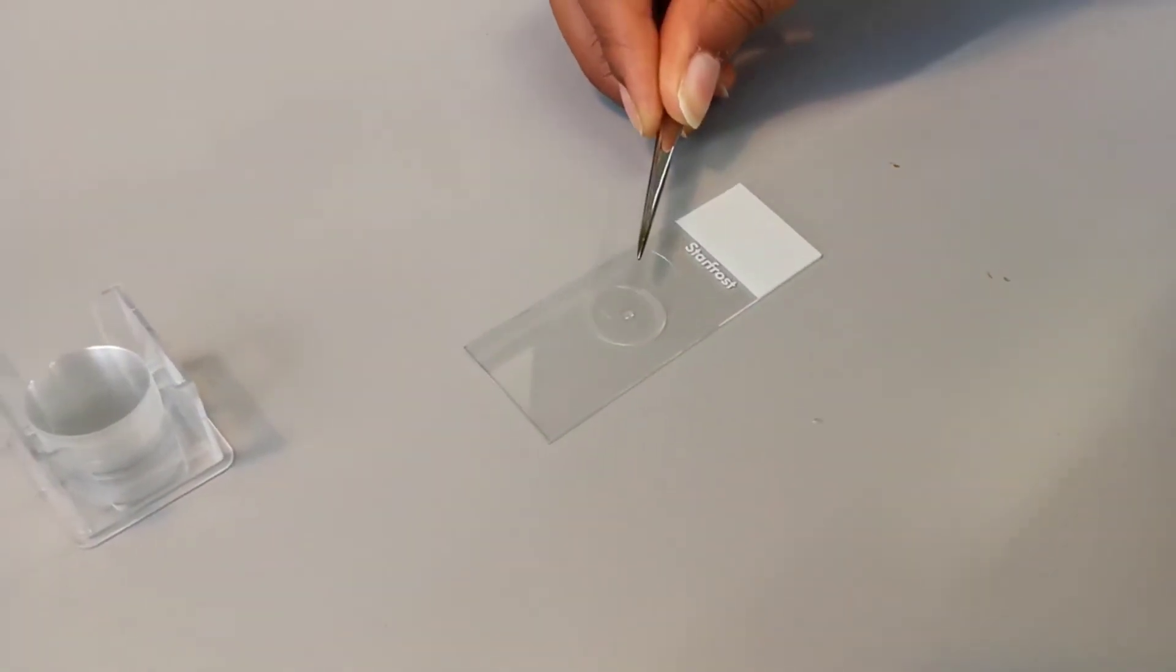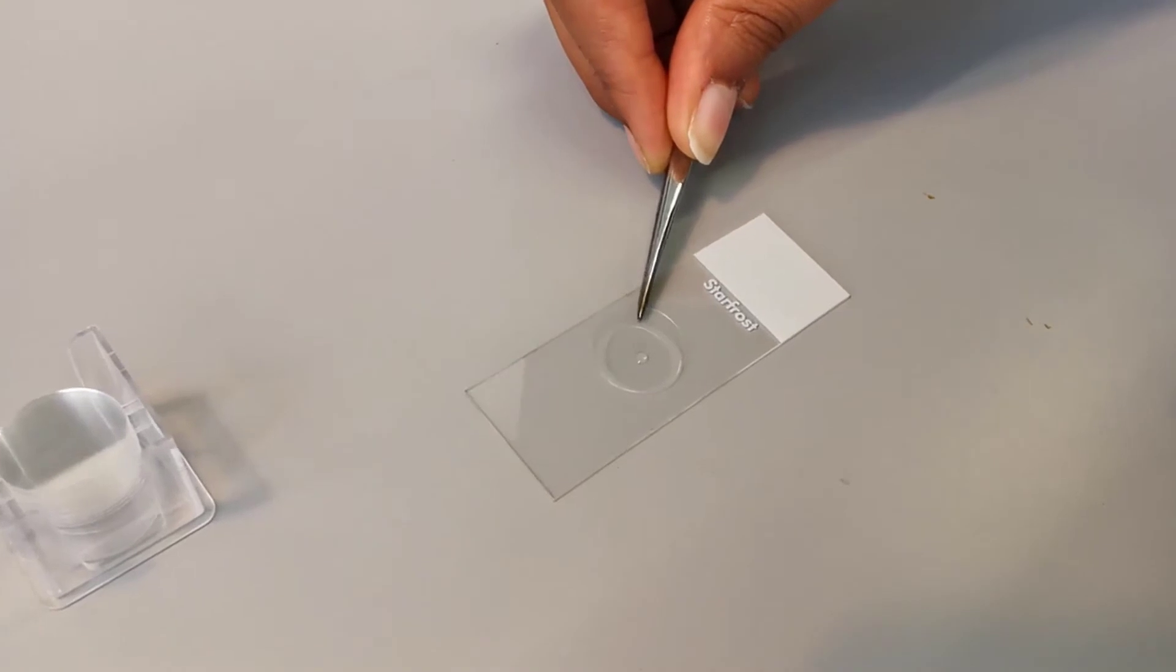Now, a glass coverslip is carefully placed on the ring of wax as shown.